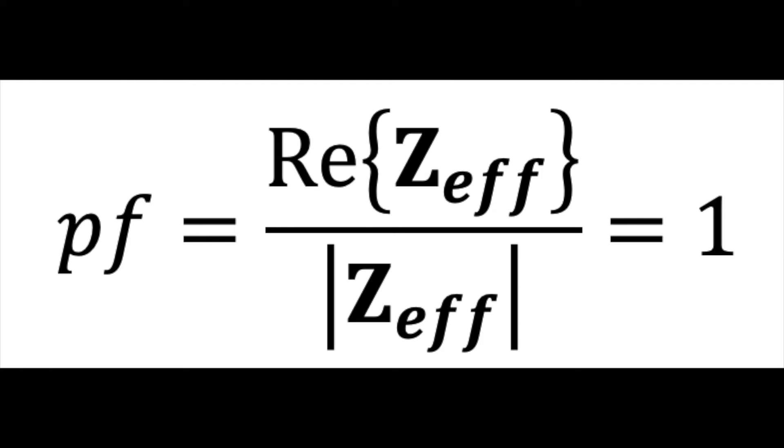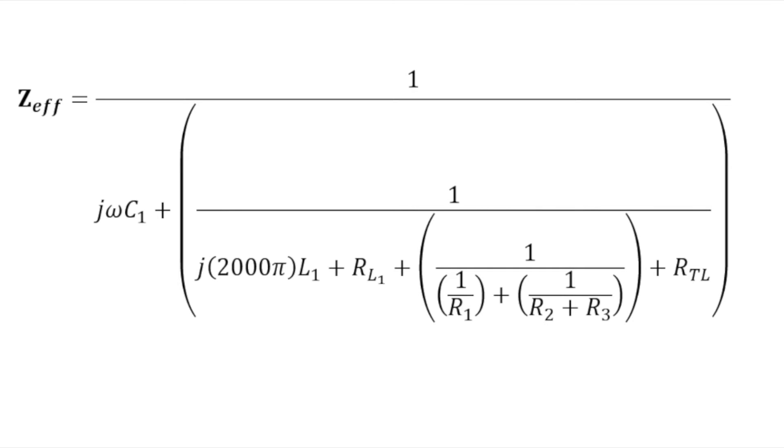However, our total impedance is actually going to be different than the total impedance that we had the last time because of the capacitor, so now it's going to be the following. If we substitute this value for the total impedance back into our first equation, we get that we'll need a capacitance of roughly 216 nanofarads.